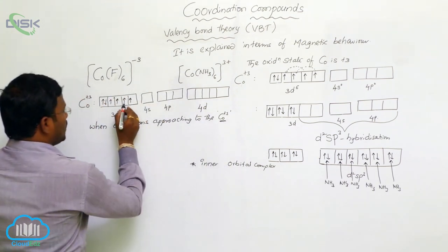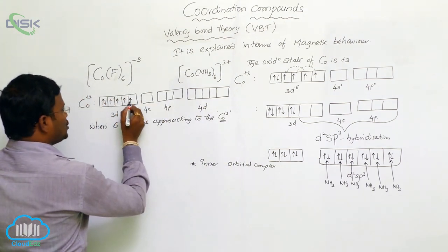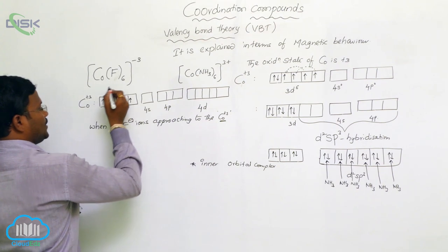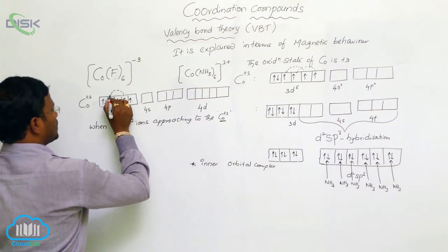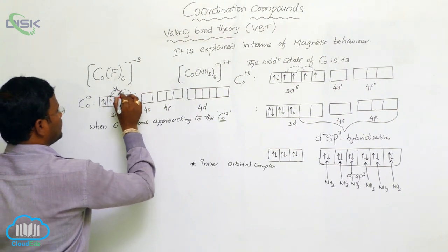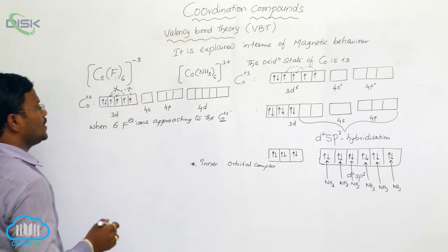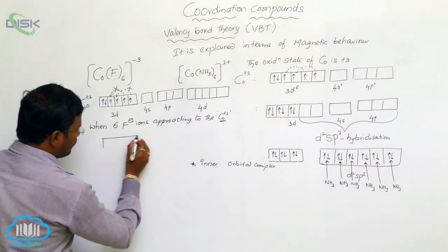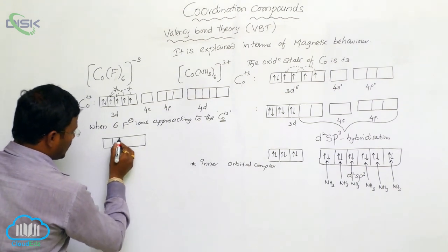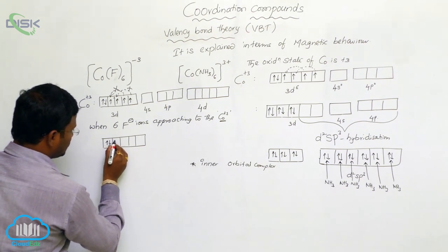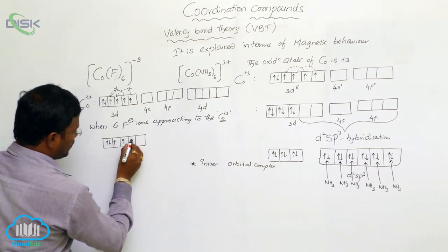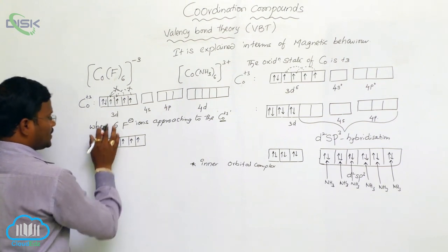So, there is no transfer of these electrons here. Not takes place. So, while they are not participates or not involved into the inner orbitals, transfer of inner orbitals, it remains unchanged. Still, one d orbital in 3d series, one d orbital with two electrons and remaining 4d orbitals with single electron.